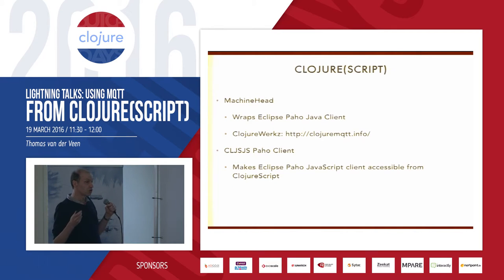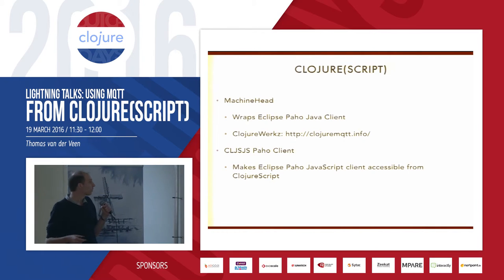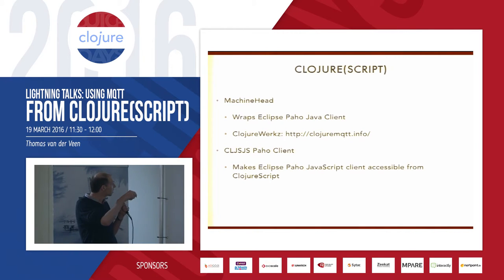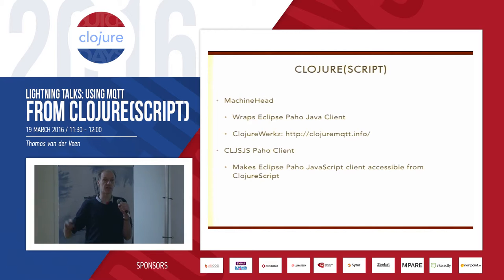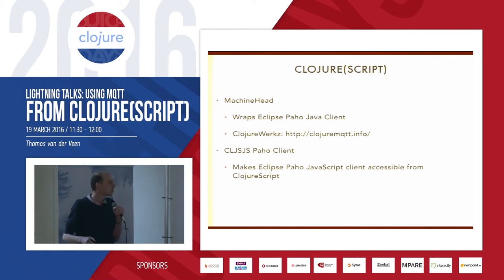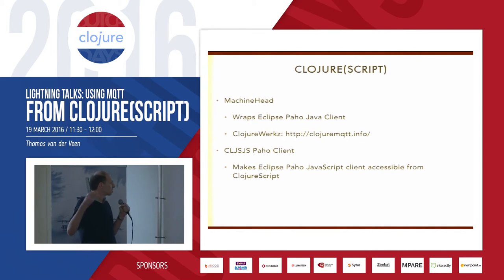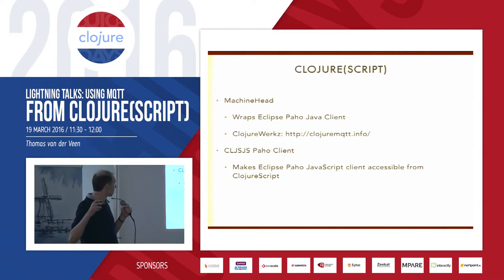For Clojure and ClojureScript, there's the Machine Headband library from the Clojure Works people, which wraps the Eclipse PAHO Java client. You can find it at clojuremqtt.info. It works pretty well — no problems. And there's a CLJS-PAHO client, which makes the Eclipse PAHO JavaScript client accessible from ClojureScript.